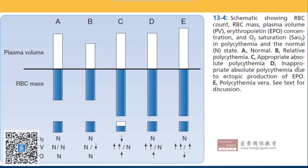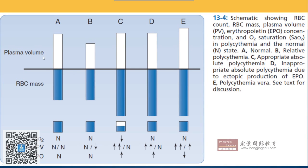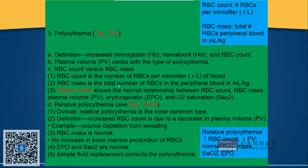For panel D, ectopic EPO production — such as from a tumor or renal lesions compressing the juxtaglomerular cells — can increase EPO, which increases RBC mass while plasma volume stays normal. The key difference between C and D is arterial oxygen saturation. Reviewing panels A through E: A is normal, B involves dehydration. For Relative Polycythemia, it results from dehydration, and the corresponding First Aid table matches this diagram.